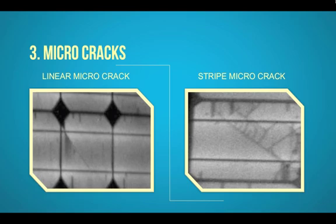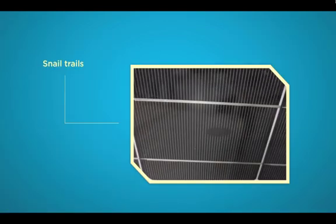Micro-cracks can be found through EL testing which is an imaging measurement process allowing to peer directly into the cells of a PV module and locate potential inherent defects. Visually micro-cracks may appear in the form of the so-called snail trails on the cell structure. However, snail trails can also be the result of a chemical process causing the surface of the cell to change or hotspots.